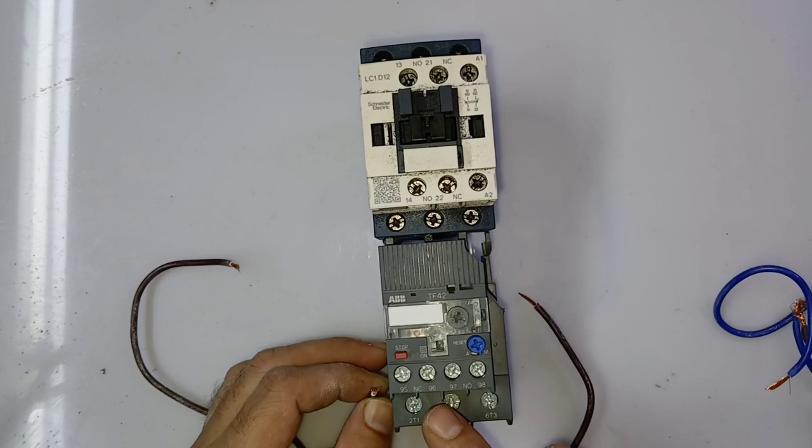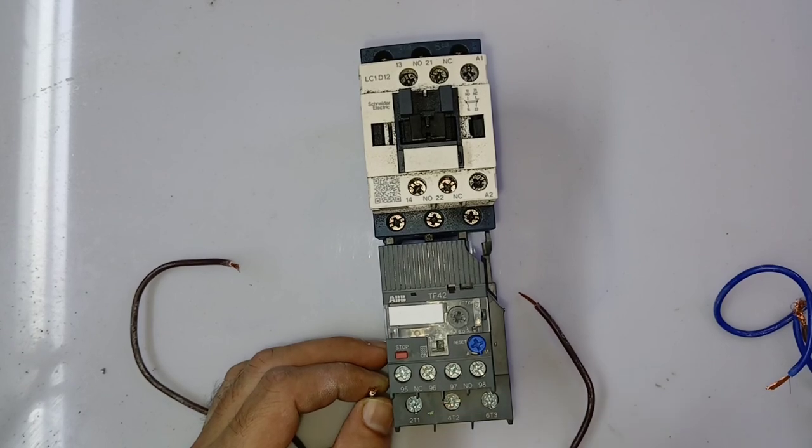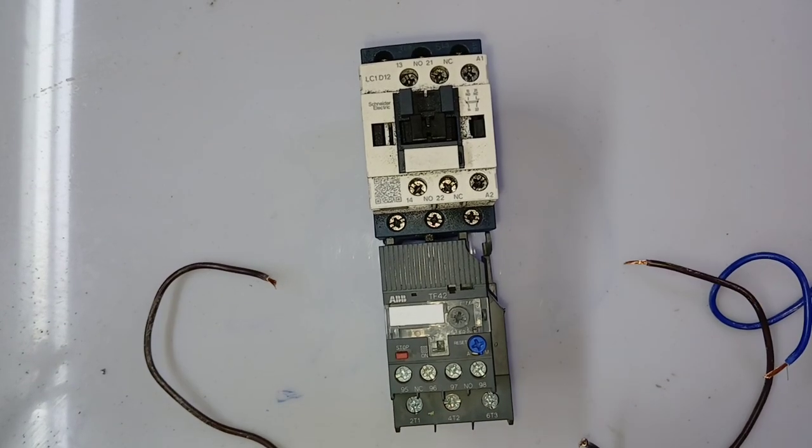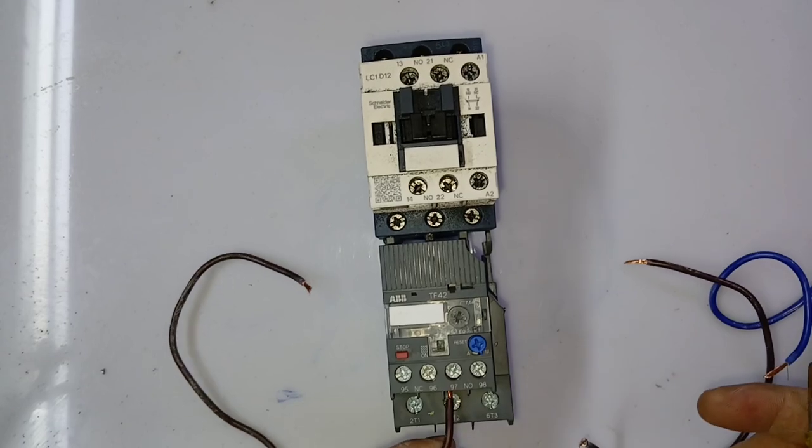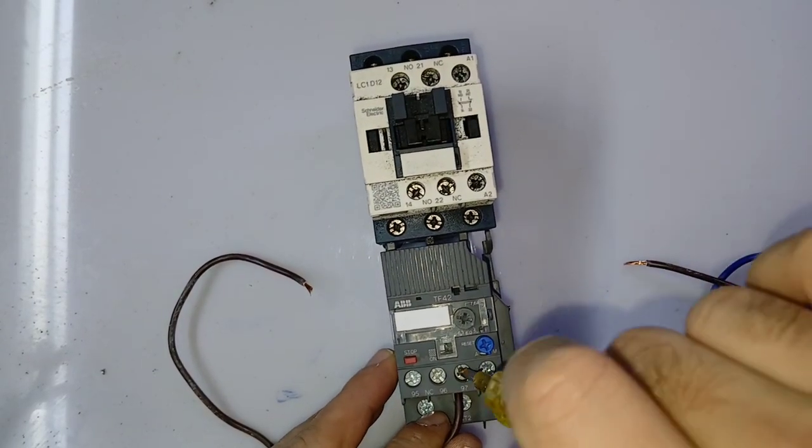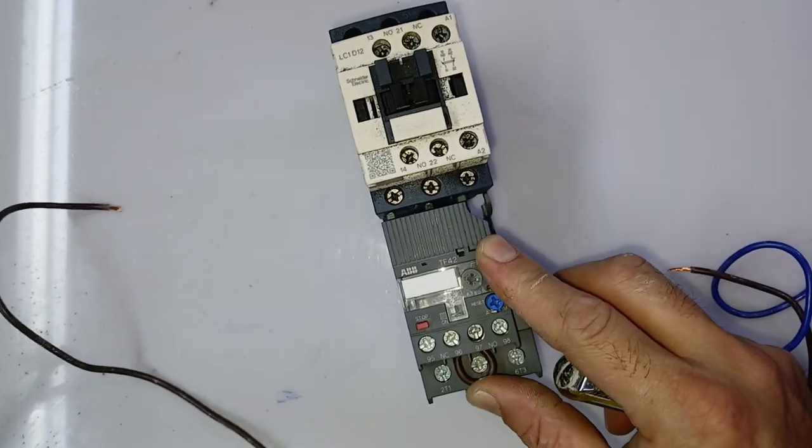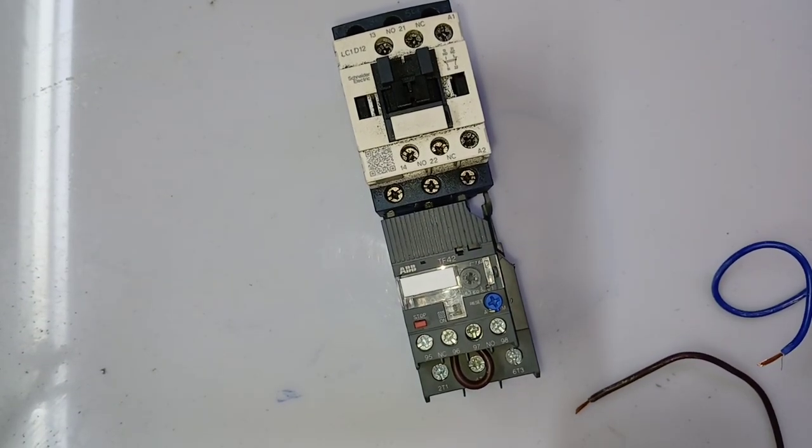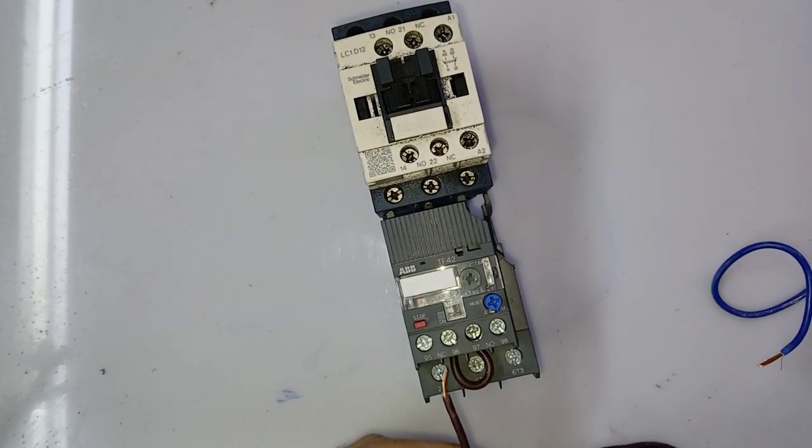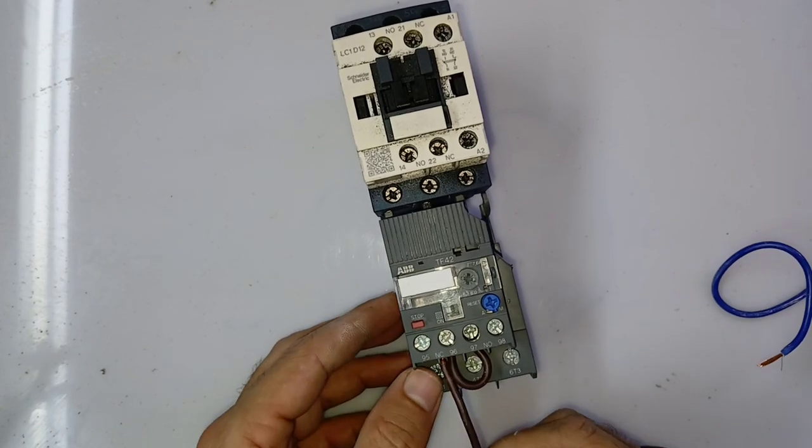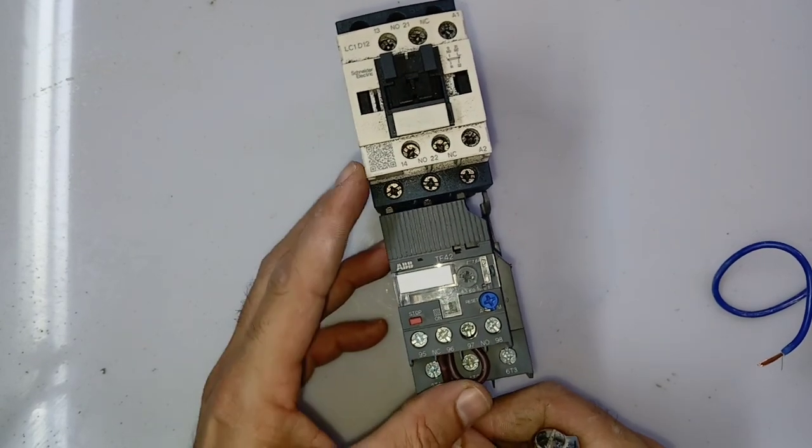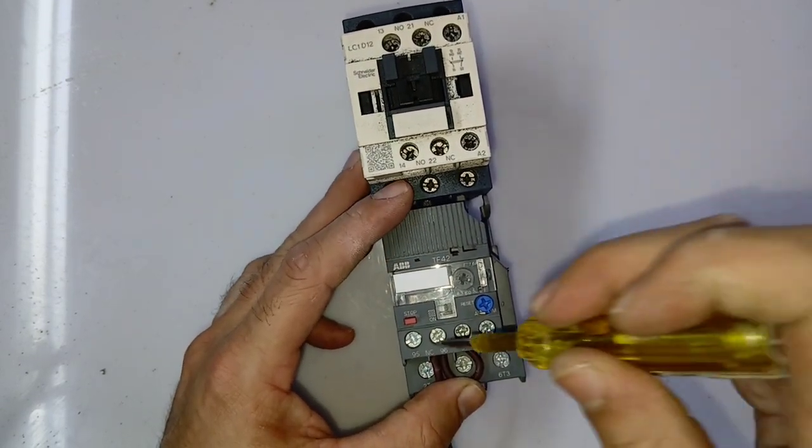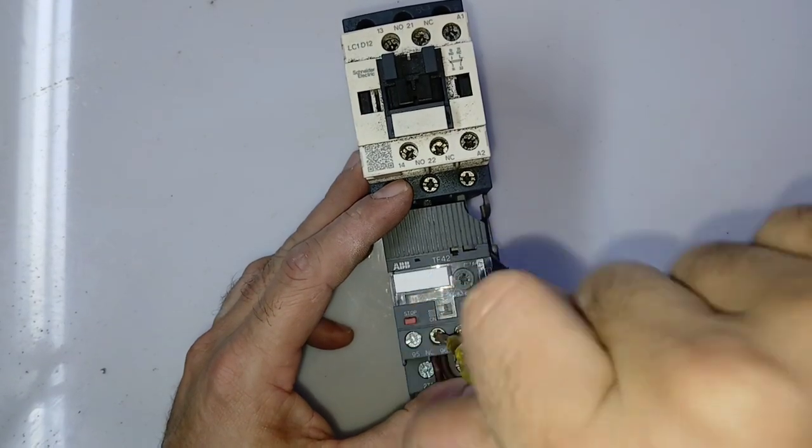I will connect all the cables now and test it practically. There is NC and NO contact. Now I will connect the cable. First of all, you need to give one loop from 96 and 97 - loop is given. Now you need to connect the line to the same loop, number 96 or 97.